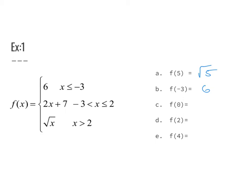For f(0): 0 is not greater than 2, but it is between negative 3 and 2, so I plug it into 2x plus 7. That gives us 2 times 0 plus 7, which is 7. For f(2): 2 is not greater than itself, so I don't use the third piece. But 2 is less than or equal to itself, so I use the second expression: 2 times 2 plus 7, which equals 11.